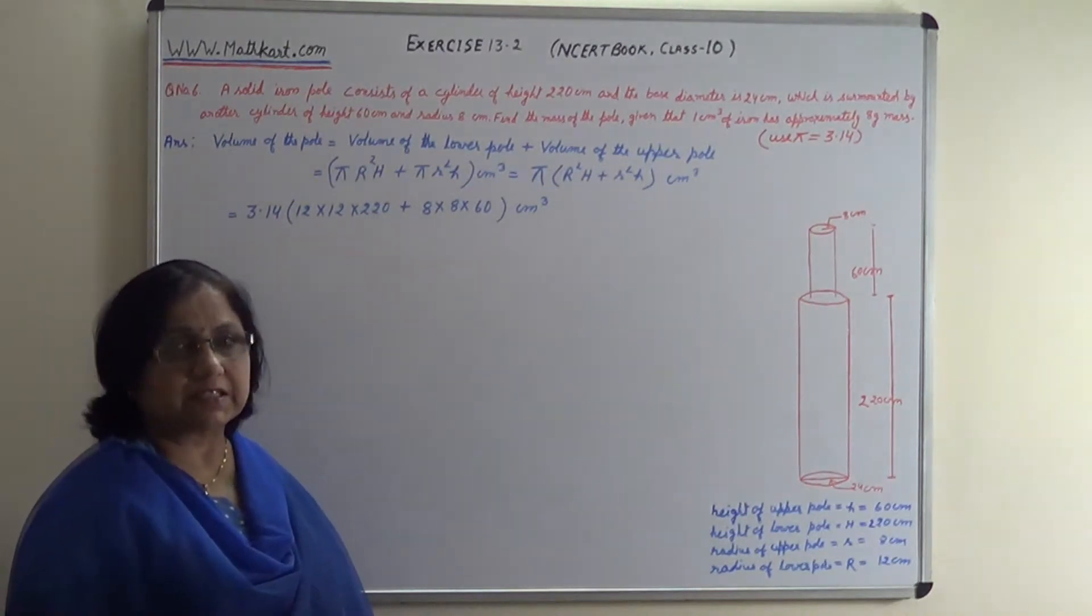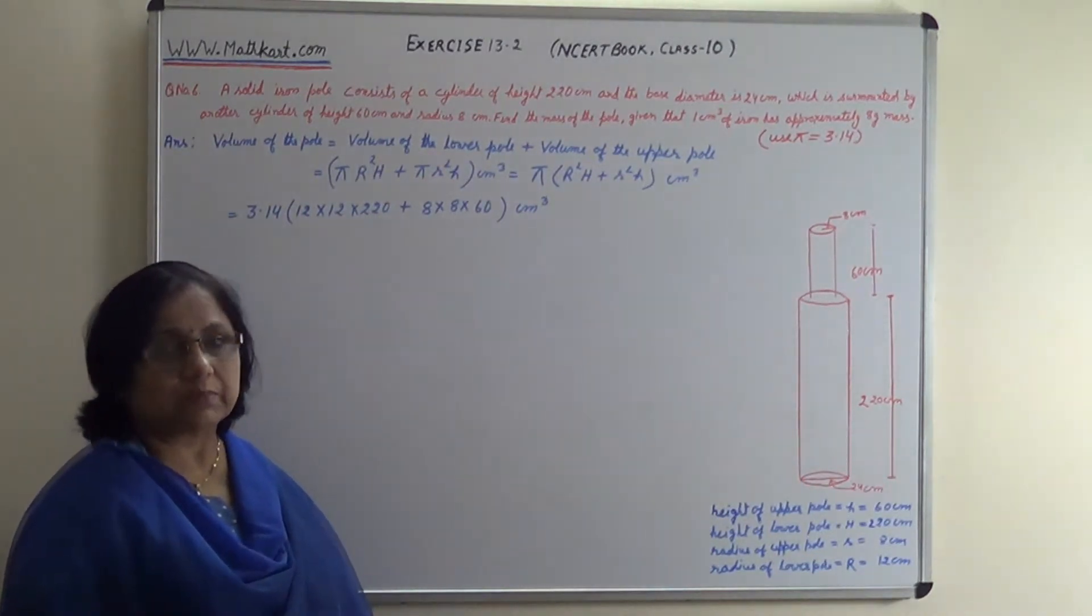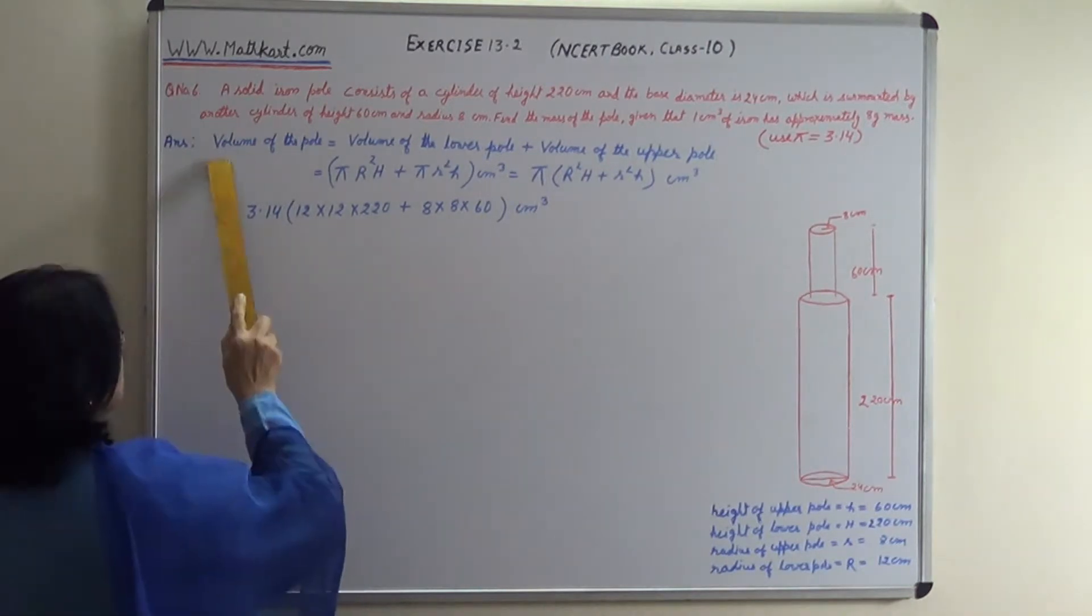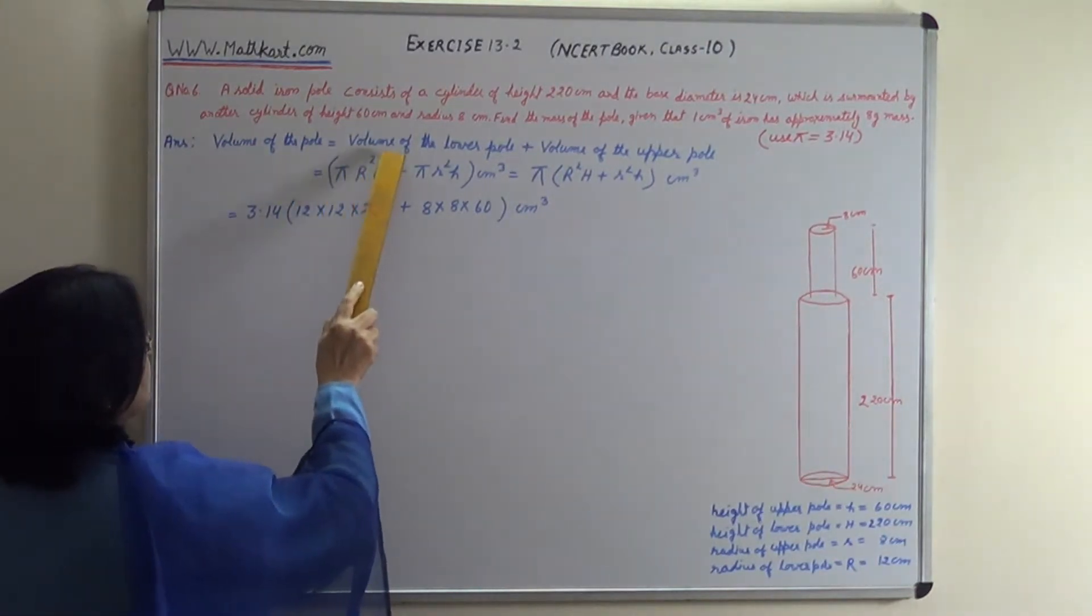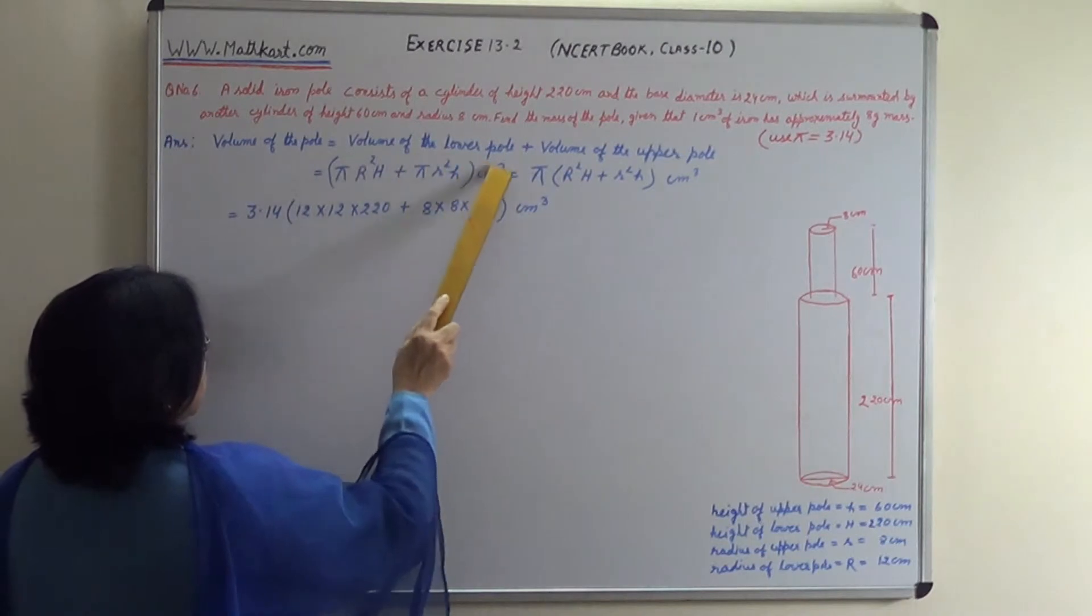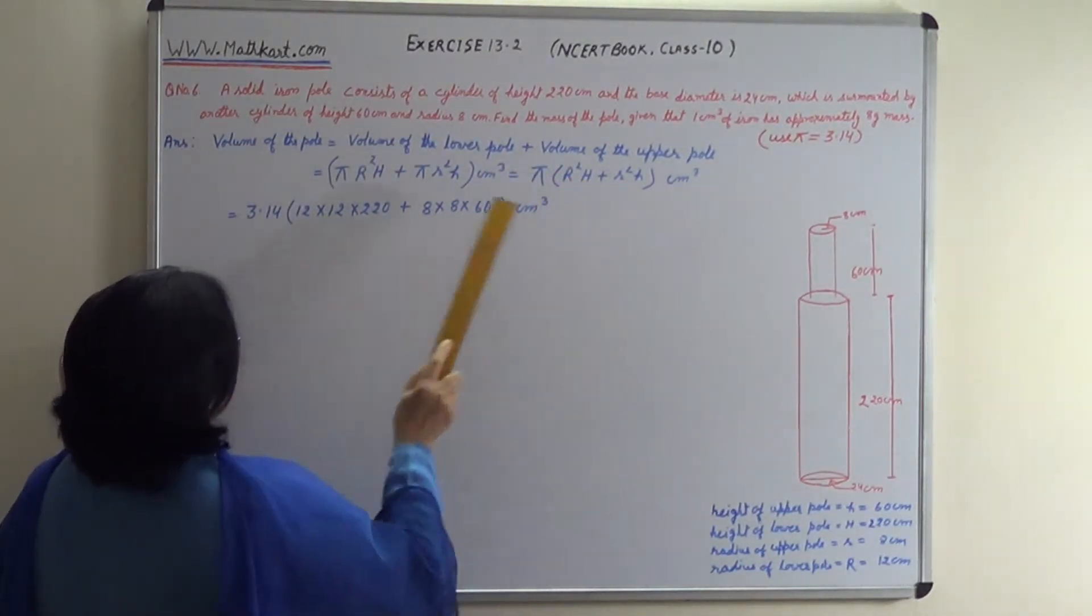The mass per 8 cubic cm, we'll multiply that. Total volume of the pole equals volume of the lower pole plus volume of the upper pole.